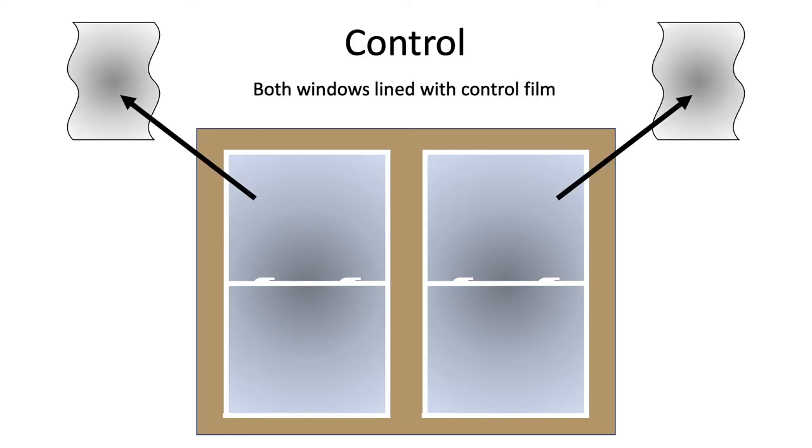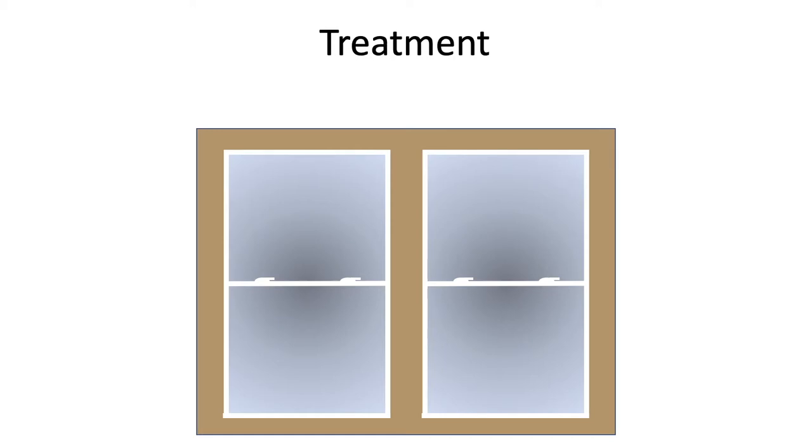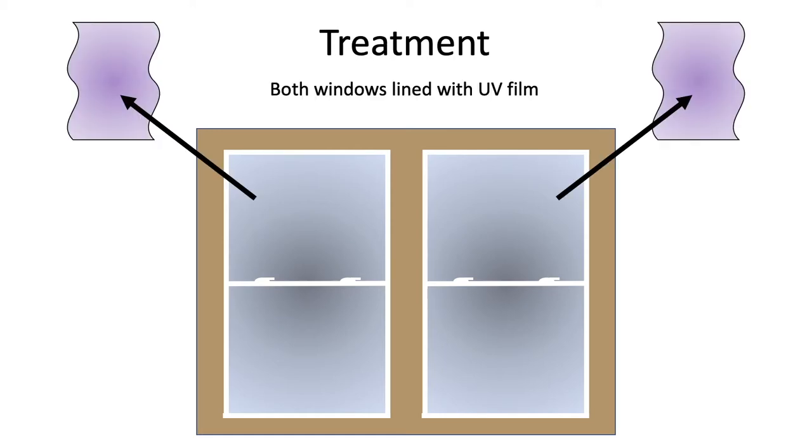However, the forced choice treatment may not be entirely representative of what a bird would be likely to encounter on a real building, since typically all windows on the same structure would either be treated or untreated. Because of this, we also included a control-only condition in which both windows are lined with control film, as well as a treatment-only condition in which both windows are lined with UV film.